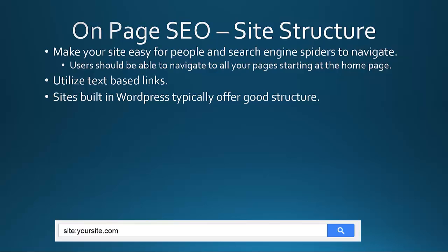Utilize text-based links within your content. You don't want to have flash links — those are kind of an older thing — but you'll always want to have text-based links, meaning links that are based on text. Image links work okay, but you also want to make sure that there are text links as well, because that's the easiest way for search engines to find your content.